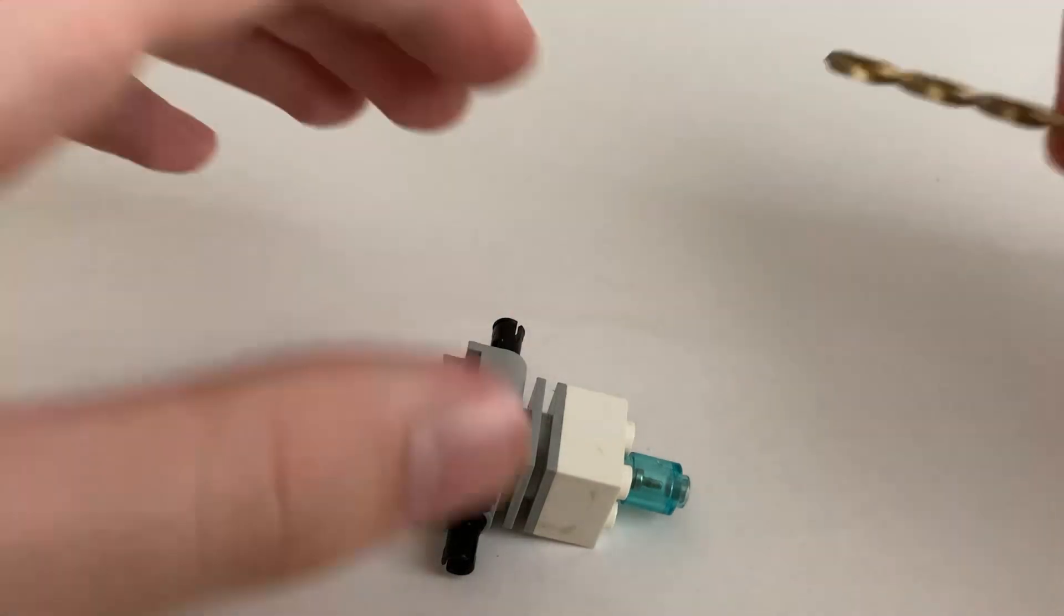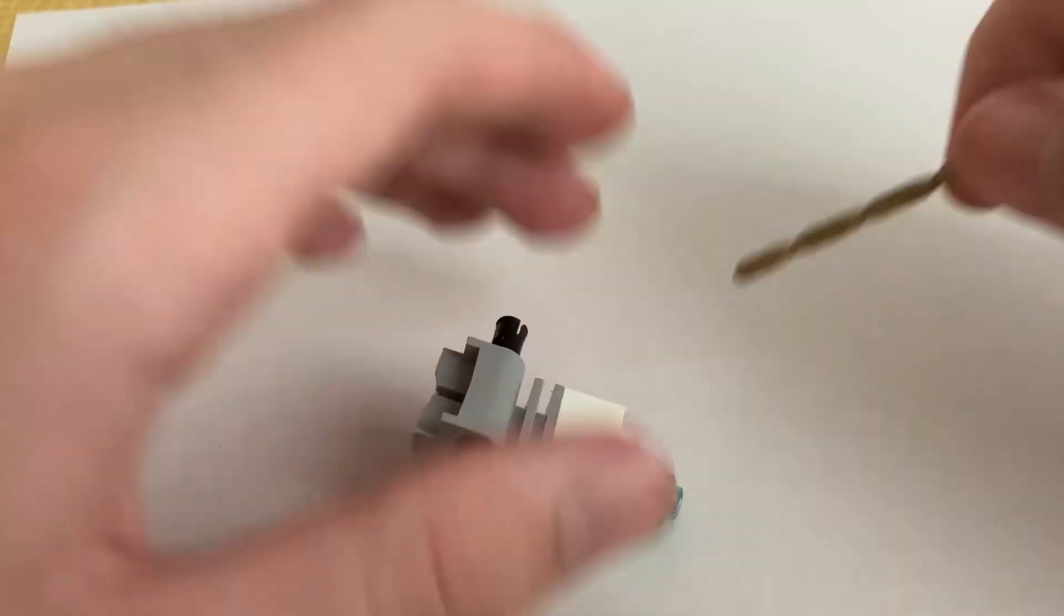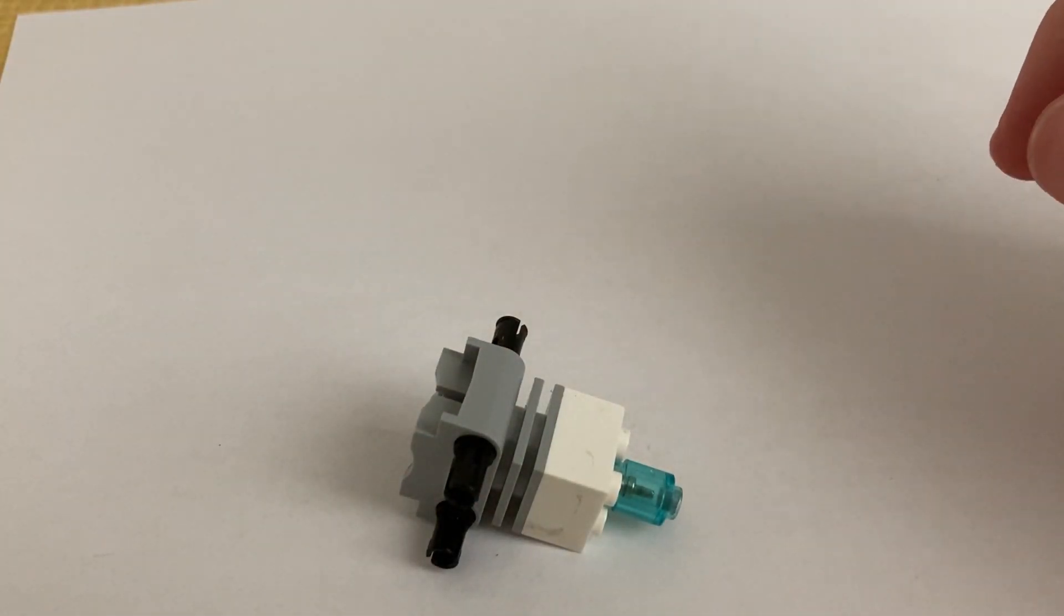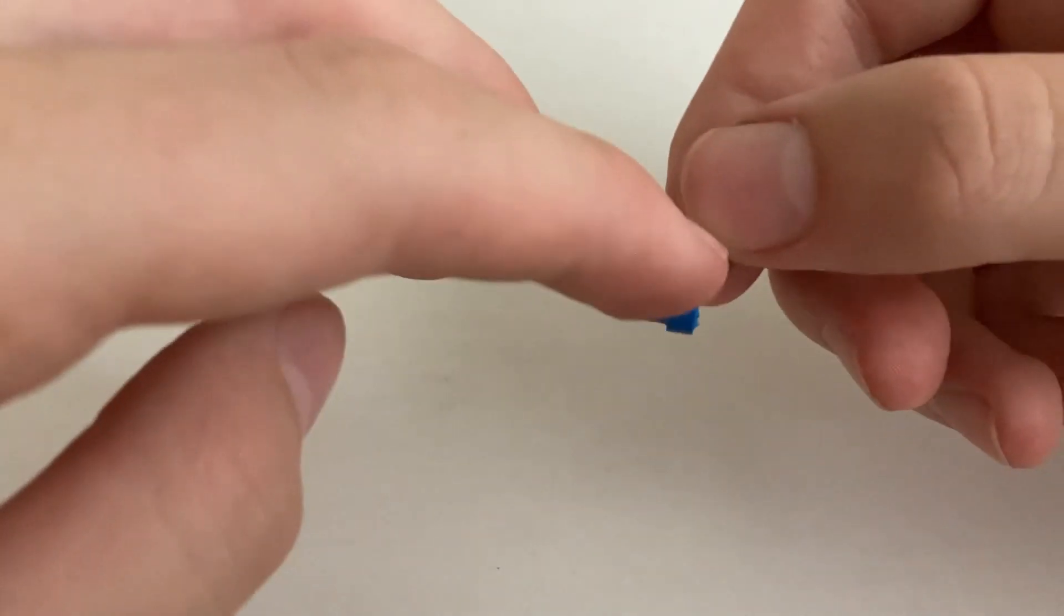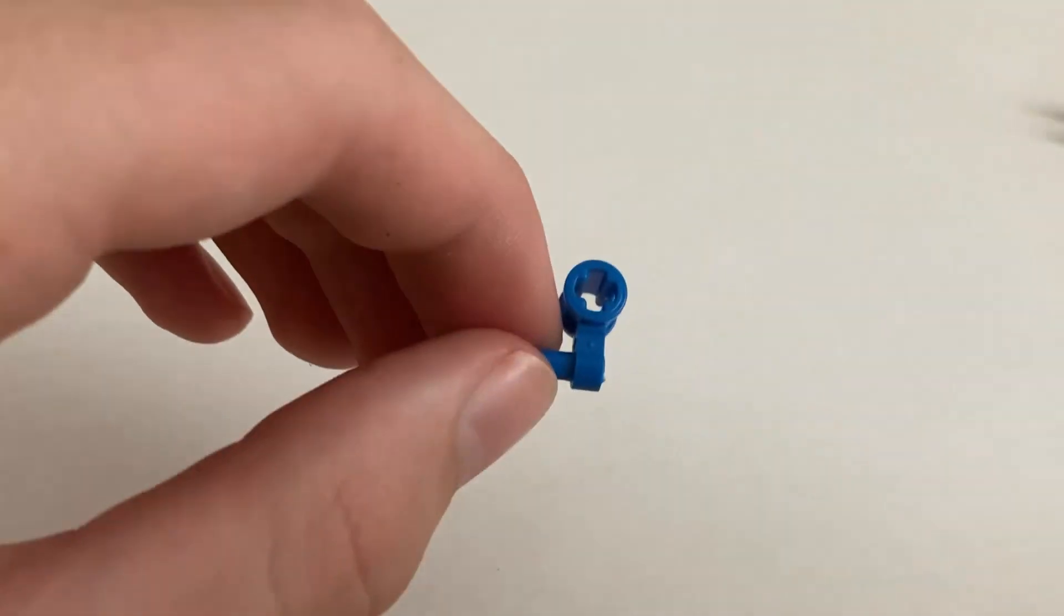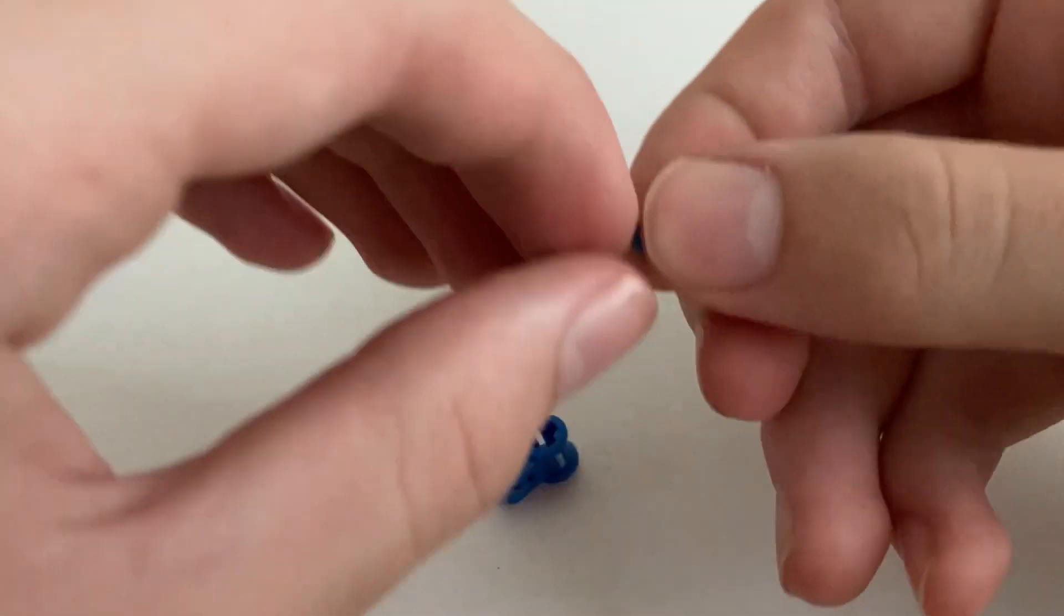And then use a 1/8th drill bit and then drill through that same hole again. And then after that, take one of these T-shaped connectors and then just cut off one of the pieces like here, like this.